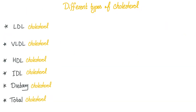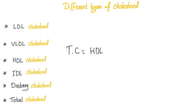What are the different types of cholesterol? LDL — the bad cholesterol. VLDL — very low density lipoprotein, also bad. HDL — high density lipoprotein, that's good. IDL is intermediate density. There's dietary cholesterol from food like a double cheeseburger. Total cholesterol equals HDL (the good one) plus LDL (the bad one) plus triglycerides over 5 — triglycerides are bad.